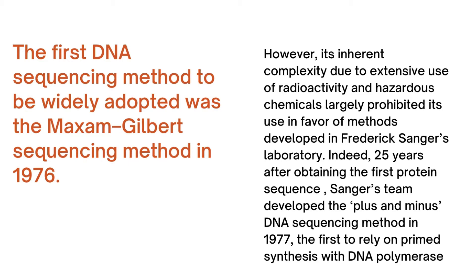In favor of methods developed in Frederick Sanger's laboratory. Indeed, 25 years after obtaining the first protein sequence, Sanger's team developed the plus and minus DNA sequencing method in 1977, the first to rely on primed synthesis with DNA polymerase.